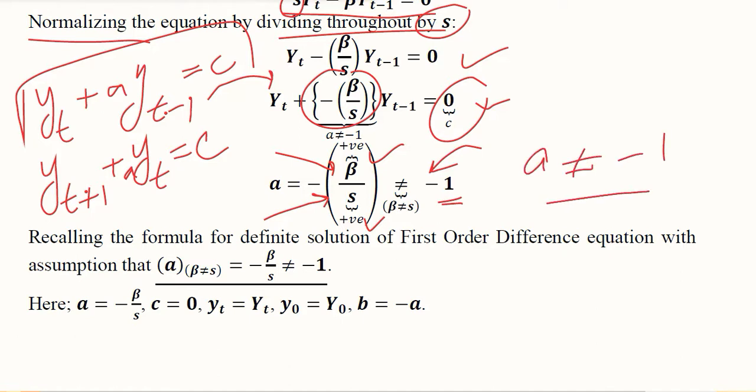However, if we want this formula to be applied, we should assume that beta and s are not equal to each other. Because if they are equal, this will become minus one and we will not be able to use this formula. So in order to use this formula, we assume that numerator and denominator are not equal.